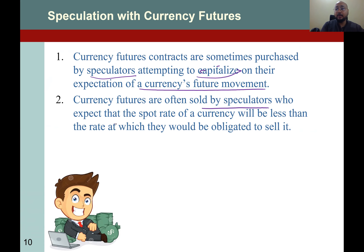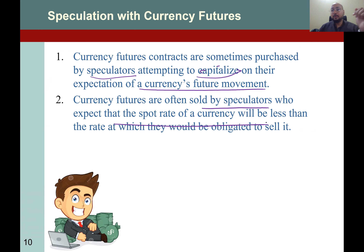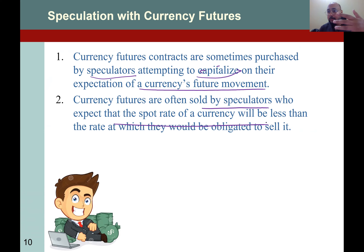Currency futures contracts are often sold by speculators who expect the spot rate of the currency will be less. Similarly, if you expect that in the future the currency will go down, you enter into a contract to sell the currency at a higher price at that time, so that you can buy at a lower price from the market and sell at a higher price — because this is a contract and both parties must honor it.